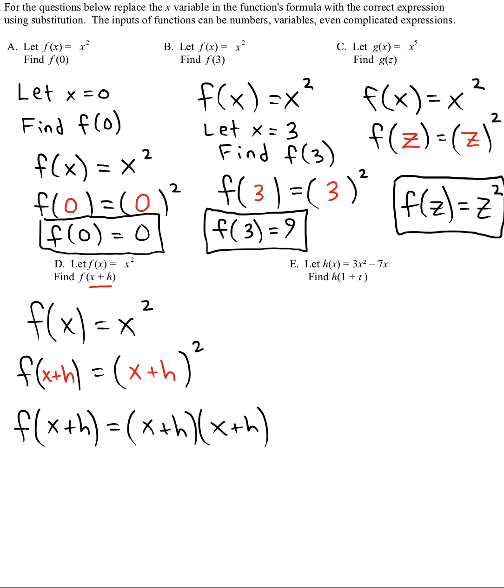And then we're going to want to use the FOIL method where we multiply the firsts, the outers, the inners, and the lasts. Get all combinations of those. So that's going to give us x times x makes x squared.